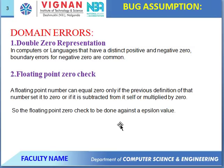Next: Floating Point Zero Checking. A floating point number can be equal to zero only if the previous definition of the setup is zero, or if it is subtracted from itself, or multiplied by zero. This is the floating point zero check.